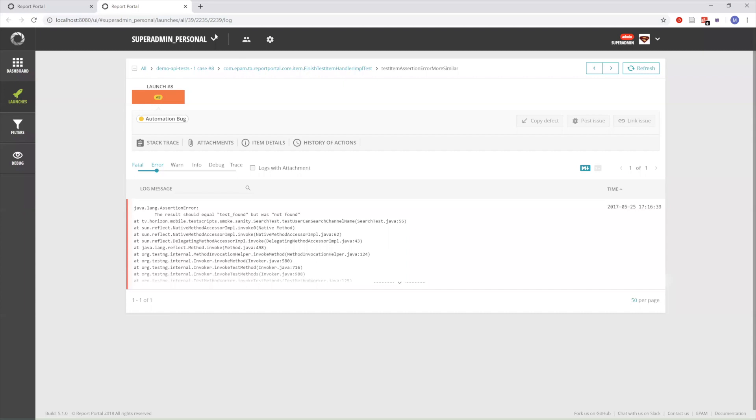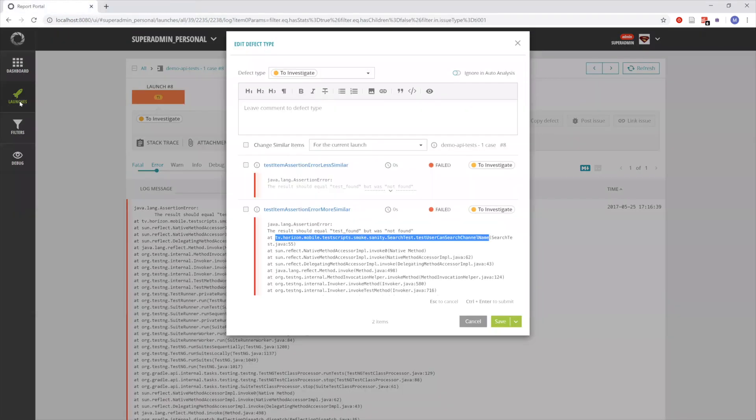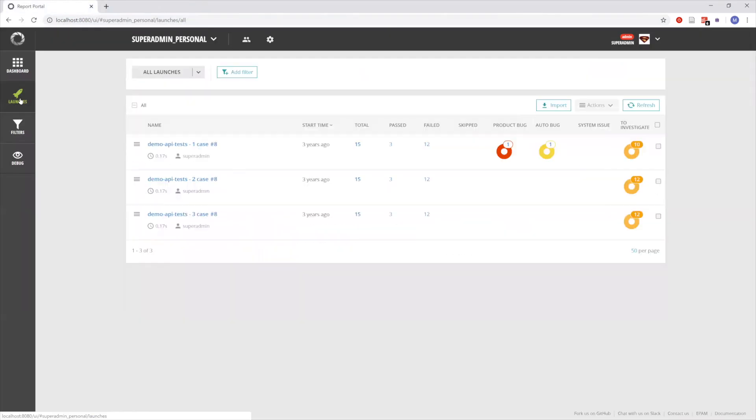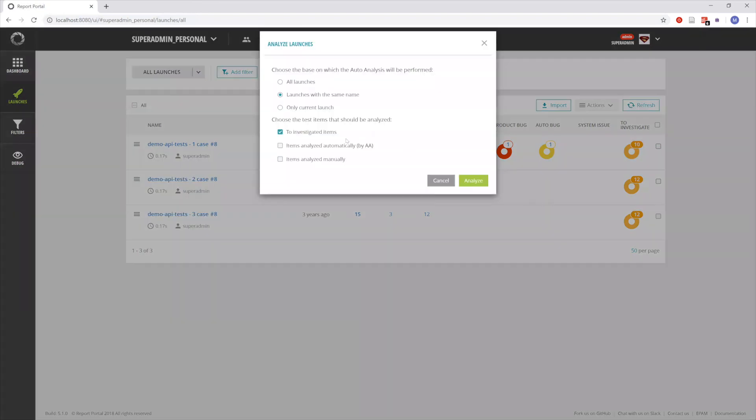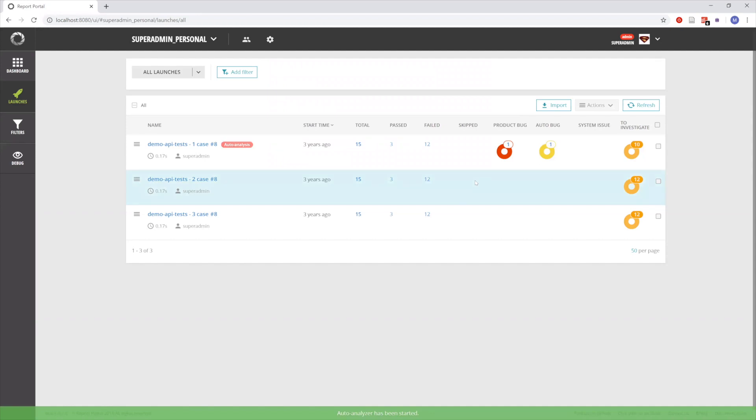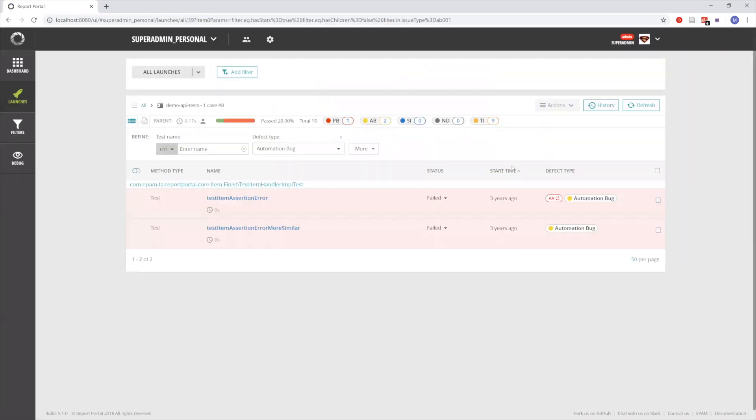For us we would like to find the more relevant result, which has the same test method in the stack trace. We're going to run only for this current launch. Our autoanalysis connected our query test item with the more similar one and assigned an automation bug.